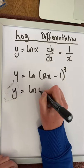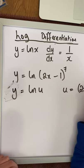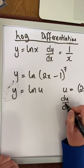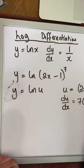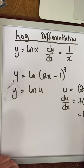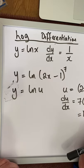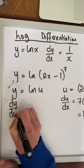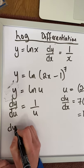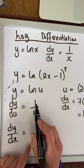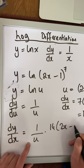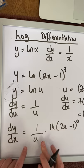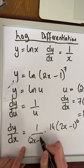Start off with y is equal to natural log of u, where u is equal to 2x minus 1 to the power of 7. We use our chain rule on the bracket: that's 7 times 2x minus 1 to the power of 6, multiplied by the derivative of the bracket which is 2, giving us 14 times 2x minus 1 to the power of 6. So that's du/dx. dy/du comes from our basic rules — that's 1 over u. We multiply them, so dy/dx is 1 over u times 14 times 2x minus 1 to the power of 6.